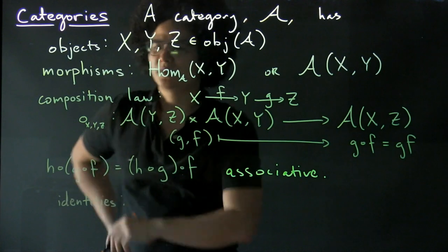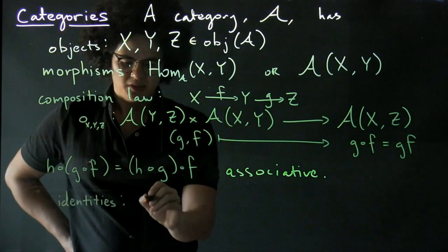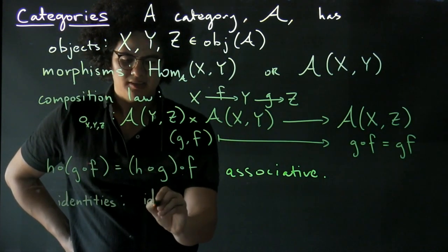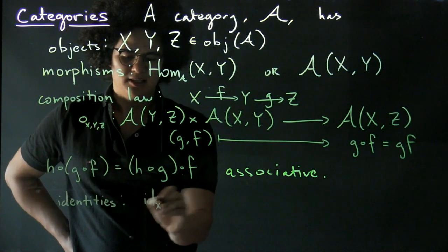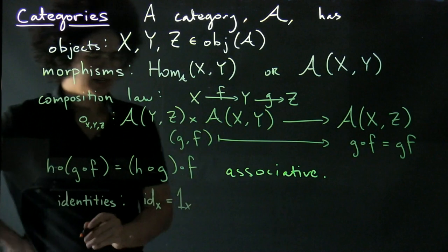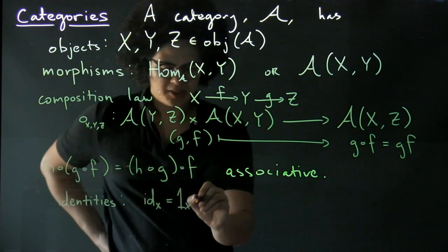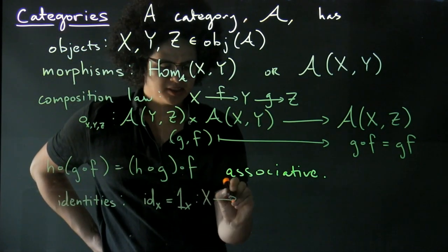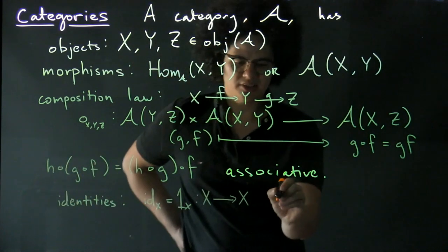Alright, so say the object that we're considering is X. We have an identity IDX, which you might also see written as 1X, and that's going to be a morphism from X to itself such that